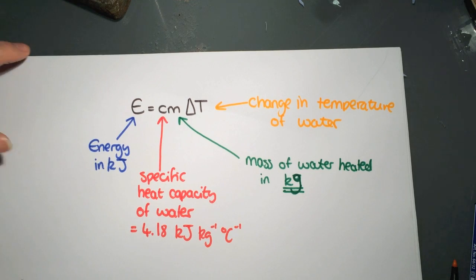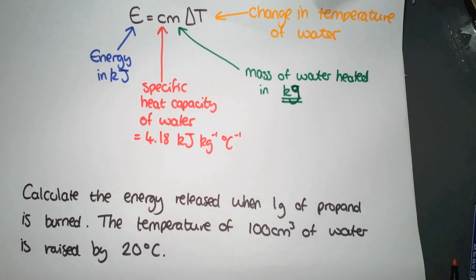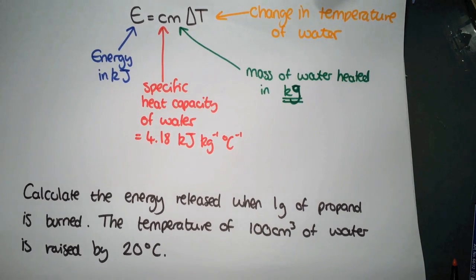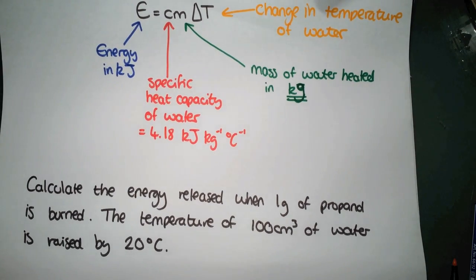We'll look at our first example. Calculate the energy released when one gram of propanol is burned. The temperature of 100 centimeters cubed of water is raised by 20 degrees C.